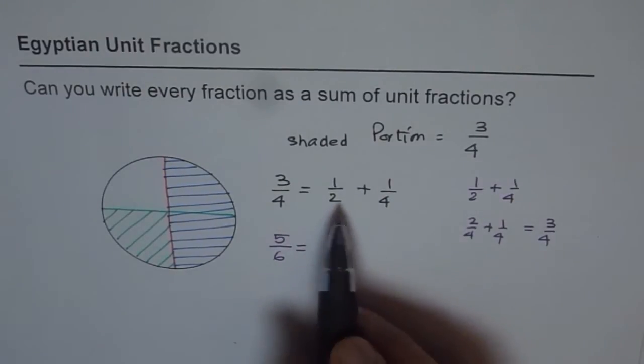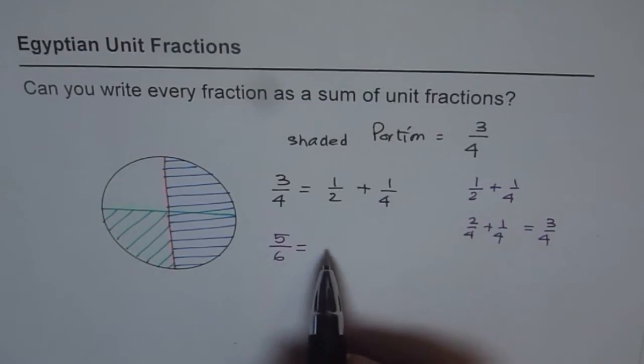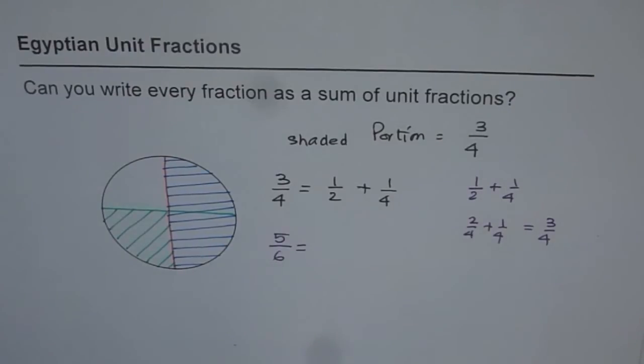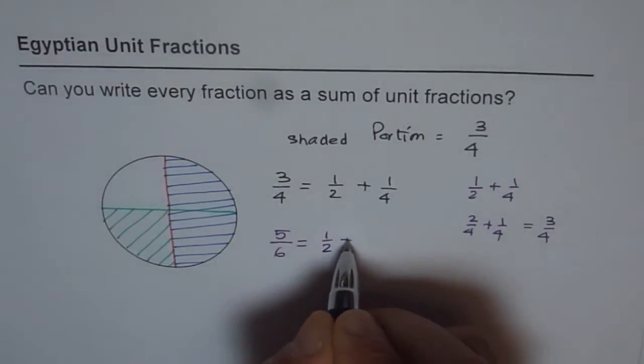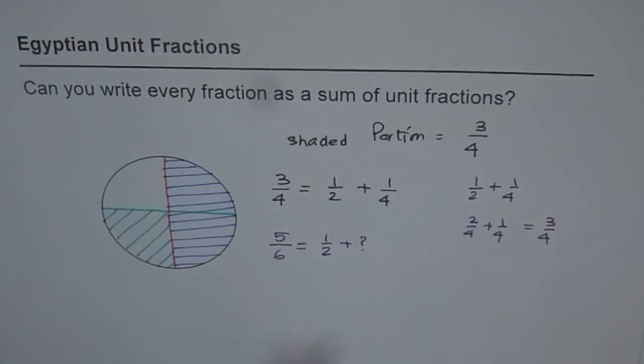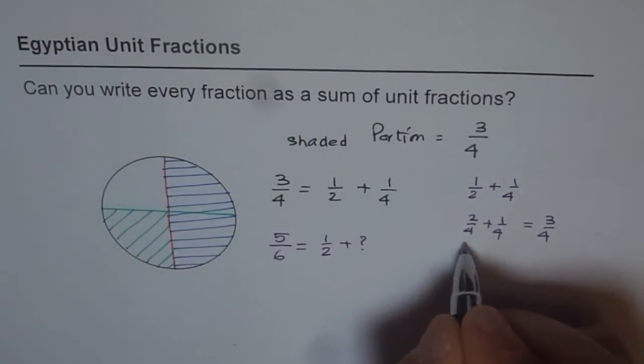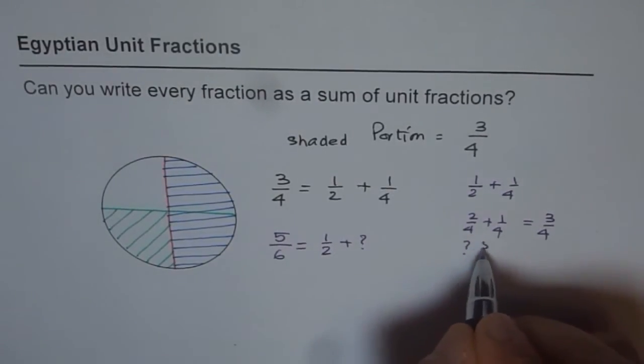So how to get these kinds of unit fractions when added to give you what you want? Here we want five-over-six. How can you get five-over-six? That is the question. So what we do is we start with a number like half. We know half is less than five-over-six. So half plus something could be five-over-six. Now what is that something? That something is actually equals to five-over-six minus half.